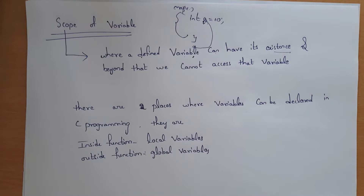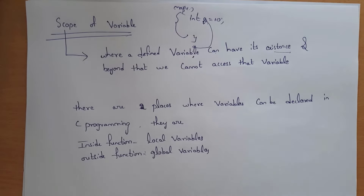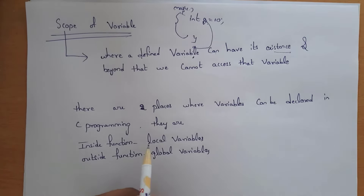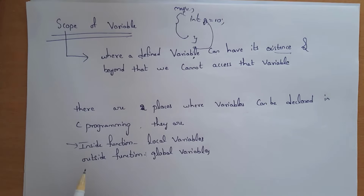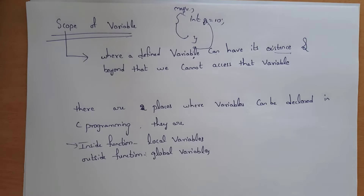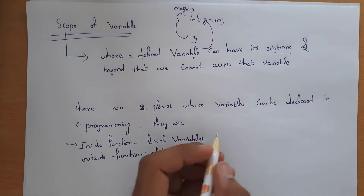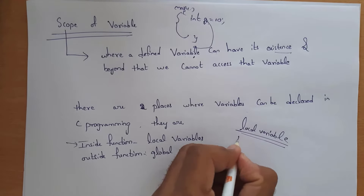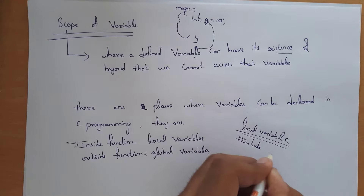In C programming we can declare variables in two places: one is inside the function, and another one is outside the function. Variables which are declared inside the function are known as local variables, and variables which are declared outside the function are known as global variables.